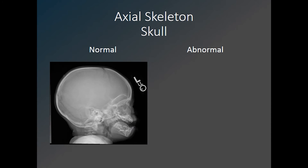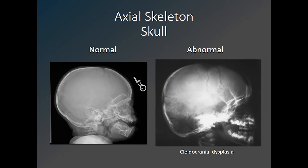Here on the left is a normal lateral skull radiograph in a nine-month-old. Many different skeletal dysplasias have abnormalities of the skull, and it is helpful to look at abnormalities not only of ossification but also of shape and configuration. On the right, we have a lateral skull radiograph in a patient with cleidocranial dysplasia, which demonstrates numerous wormian bones. These are intrasutural bones seen as separate bones within the coronal and lambdoid sutures. This has a broad differential diagnosis, including other syndromes such as osteogenesis imperfecta, pycnodysostosis, and hypothyroidism, to name a few.